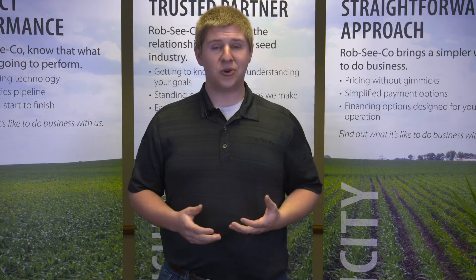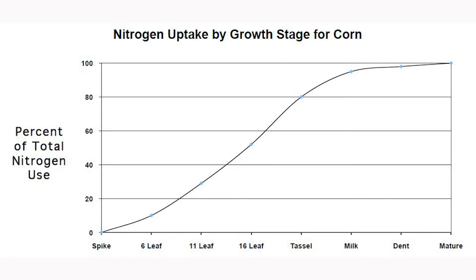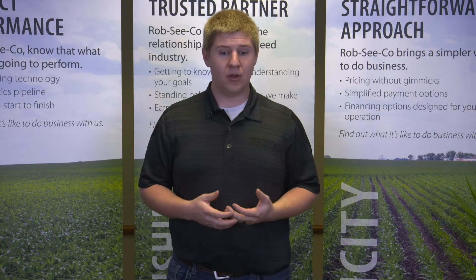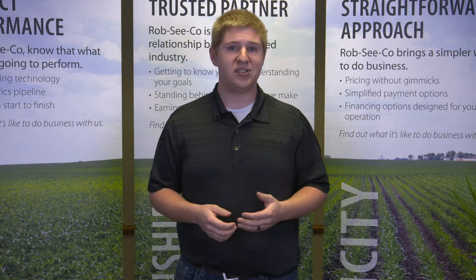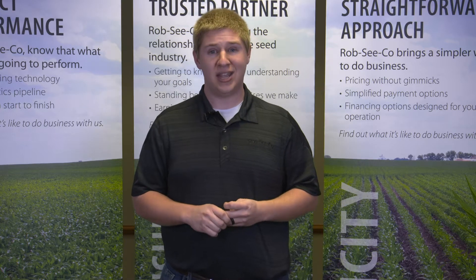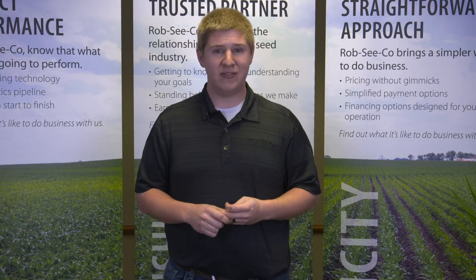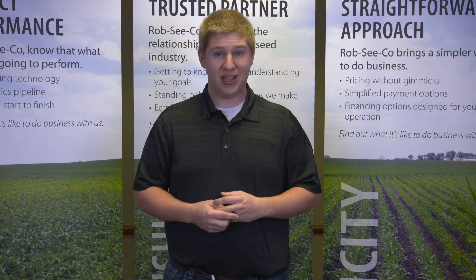The last growth stage we're going to discuss is VT through maturity. At this time, the remaining 20 to 30 percent of the yearly nitrogen uptake is taken up by the corn plant. The plant is using this last bit of N to build its ear, its kernel, and pouring it into the embryo. At harvest time, when you're taking grain off the field, you're removing approximately 70 percent of that total N in the grain, leaving behind about 30 percent of nitrogen in the field.